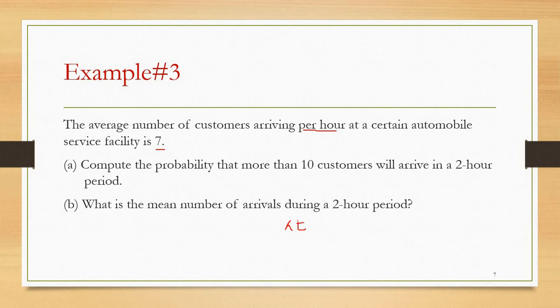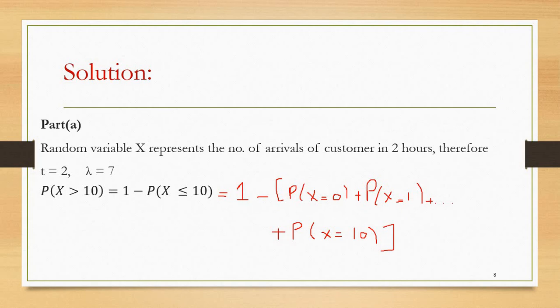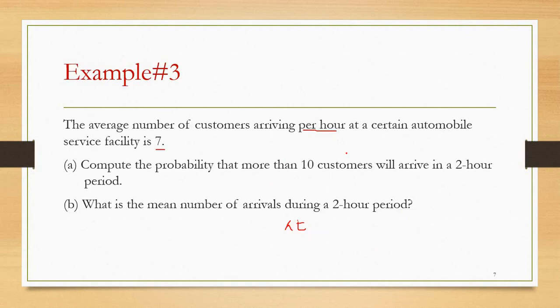Example three: the average number of customers arriving per hour at a certain automobile service facility is seven. Compute the probability that more than ten customers will arrive in a two-hour period. This is a Poisson process where lambda equals seven and t equals two, since we need the probability for a two-hour period.